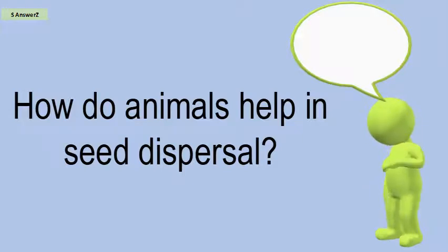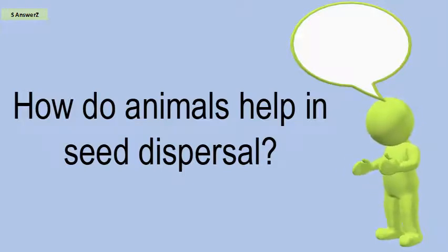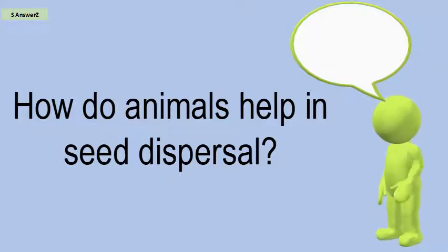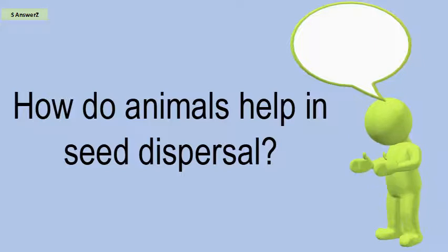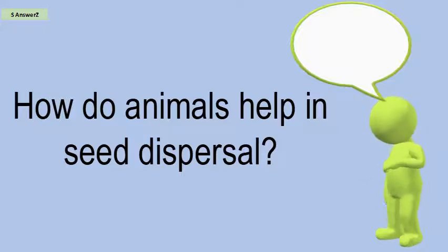First, some plants, like the burr at left, have barbs or other structures that get tangled in animal fur or feathers, and are then carried to new sites. Other plants produce their seeds inside fleshy fruits that then get eaten by an animal.